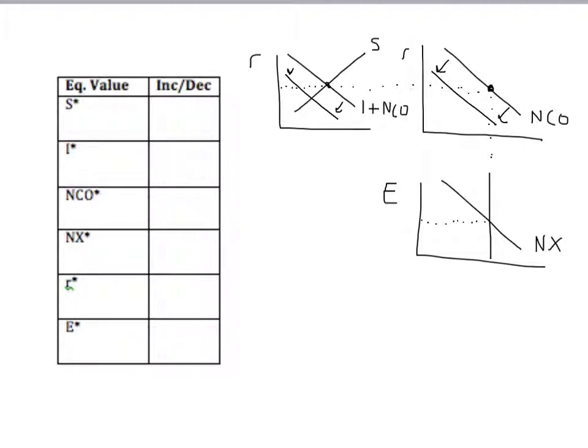We can see the immediate impact on the real interest rate. It went down, not particularly surprising. We bring that over and see that net capital outflow also decreased, and we bring that down as the supply curve in our foreign exchange market, and see that the equilibrium real exchange rate must have increased.